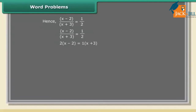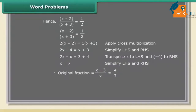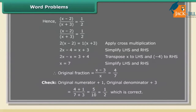Applying cross multiplication: 2(x − 2) = 1(x + 3), so 2x − 4 = x + 3. Transposing: 2x − x = 3 + 4, giving x = 7. The original fraction is (x − 3)/x = 4/7. Check: (4 + 1)/(7 + 3) = 5/10 = 1/2. Correct.